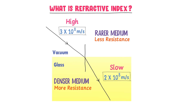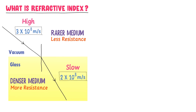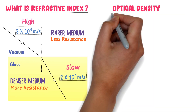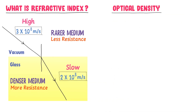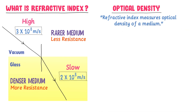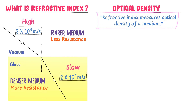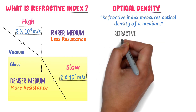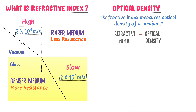Now, how can we measure the optical density of a medium? Refractive index measures the optical density of a medium. So refractive index is nothing but the optical density of a medium.